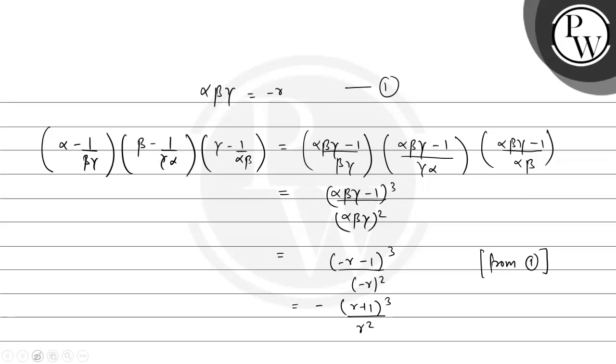Here is the final answer: minus r plus 1 whole cube divided by r square. Hope you understood it well. Best of luck and thank you.